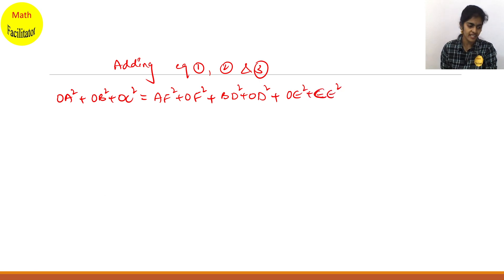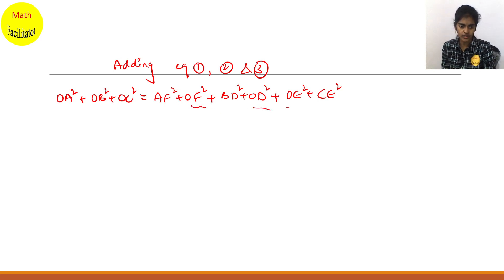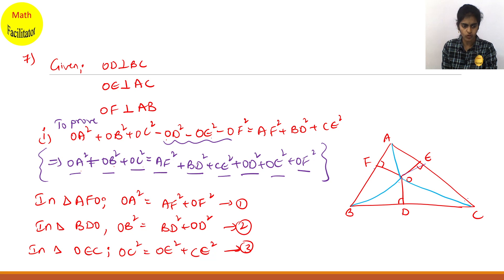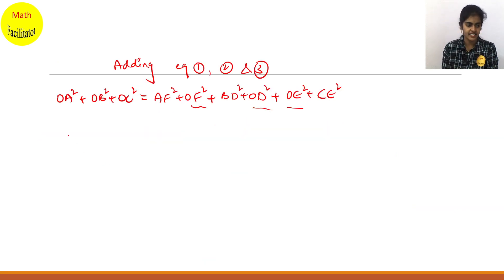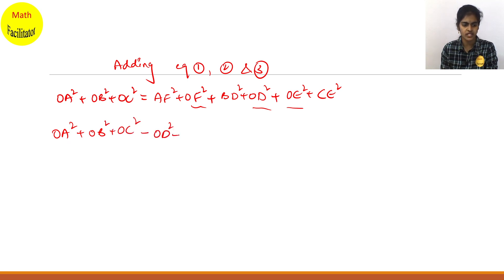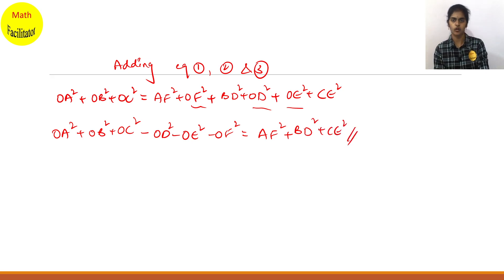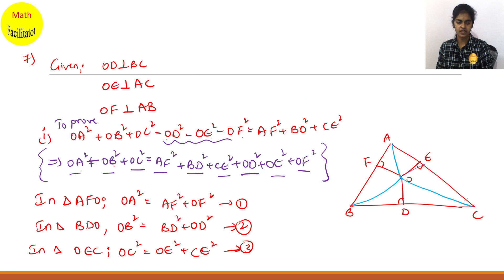CE square. But I have to take OD, OF, and OE to the other side. OD, OE, and OF are in the LHS, so taking them to RHS they become negative. So you got your proof: OA square plus OB square plus OC square minus OD square minus OE square minus OF square equals AF square plus BD square plus CE square. That's it. This is the first bit.